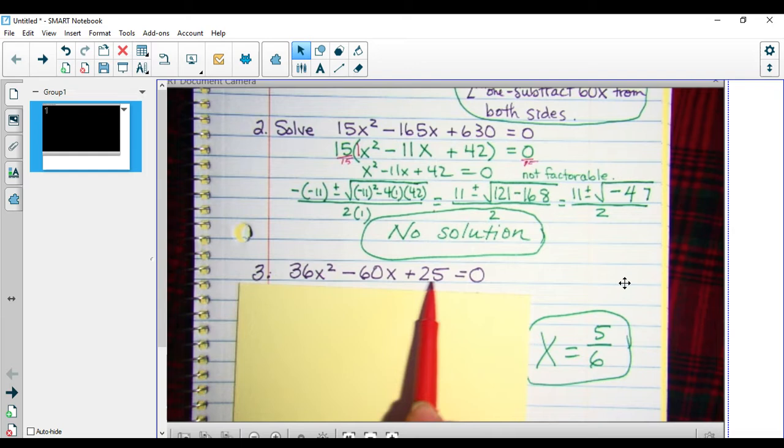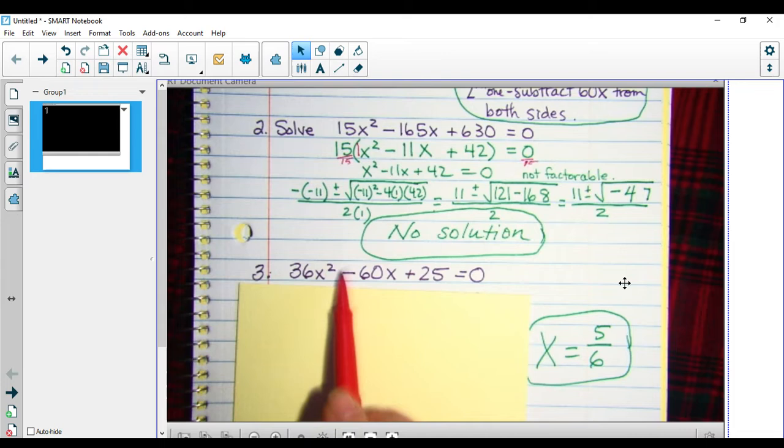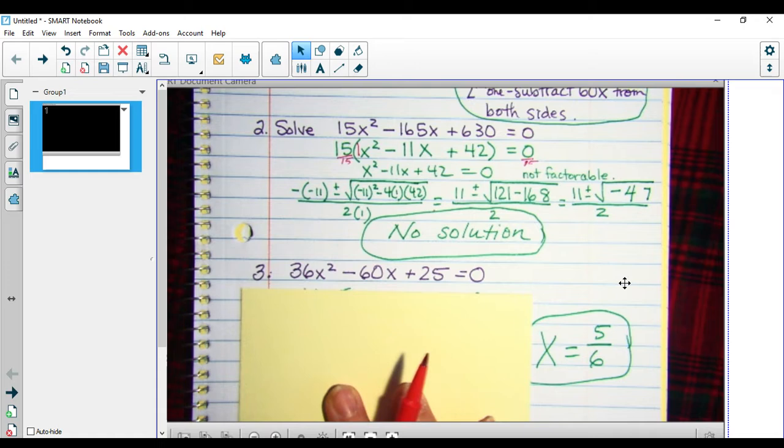6 times 5 is 30. If I make one of those values negative, it's half here. So I'm going to use my perfect trinomial square.